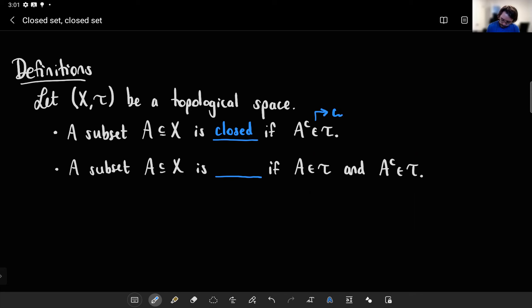So just write this down. A with a C superscript is a complement. If A complement is in tau, then it's an open set. So this says the complement is open means you're closed.